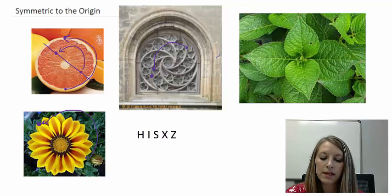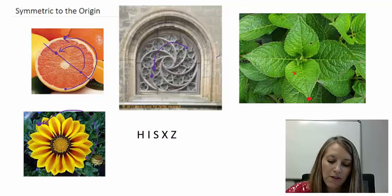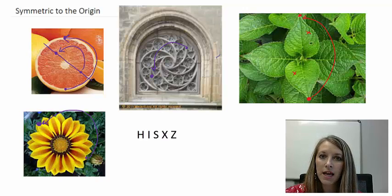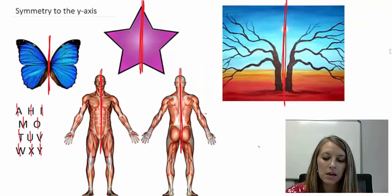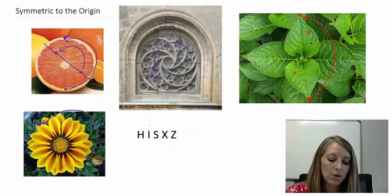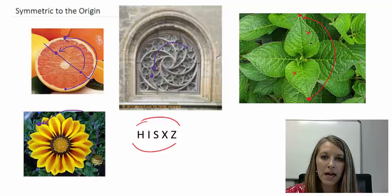We see this a lot in flowers — if I pick any point on them and rotate it halfway around the circle, it would also have a matching point on the other side. We see that with these leaf pictures too. I can pick any point, whether it be a tip or a point on the leaves, rotate it halfway around, and I end up with the opposite point. There are lots of things in nature that are symmetric to the y-axis, x-axis, and the origin. We even have a few letters in the alphabet that are symmetric to the origin — if I flip them around, they look identical.